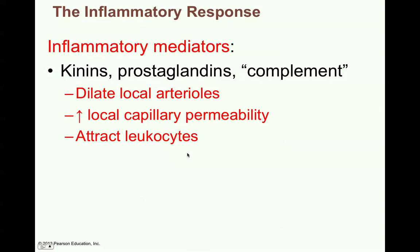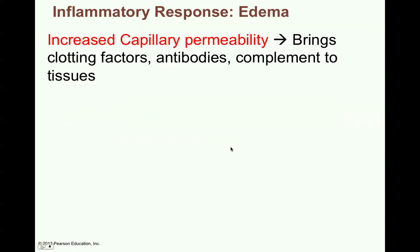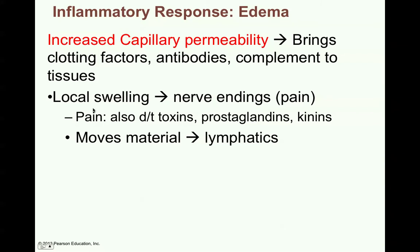These chemicals also attract leukocytes — white blood cells. The increased capillary permeability allows fluid, clotting factors, antibodies, and complement to actually leak out from the blood. This increased capillary permeability — where fluid with all of these good things leaks out — is known as edema, the swelling from tissue fluid accumulation. You get local swelling that presses on nerve endings leading to pain.